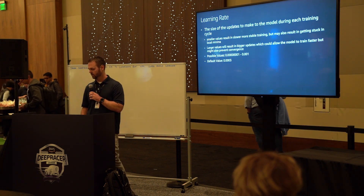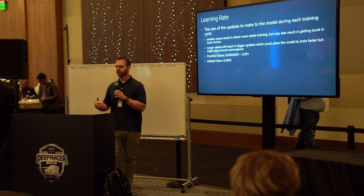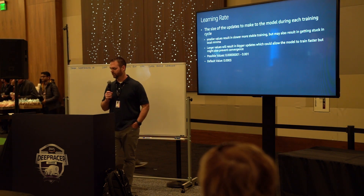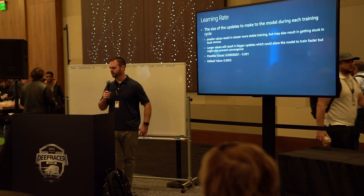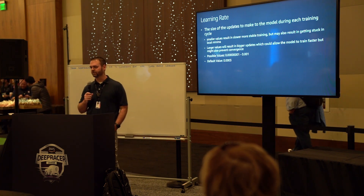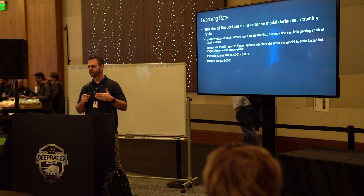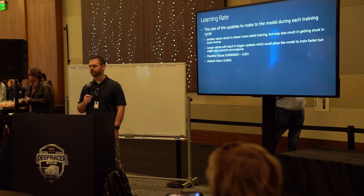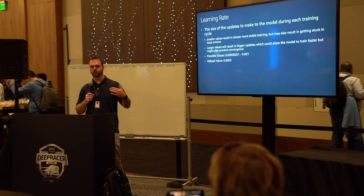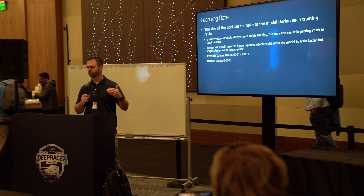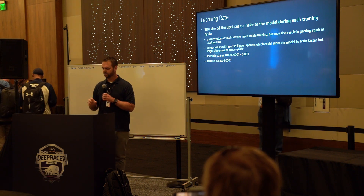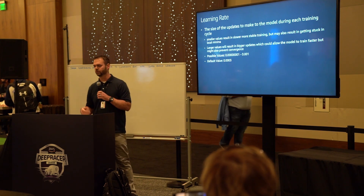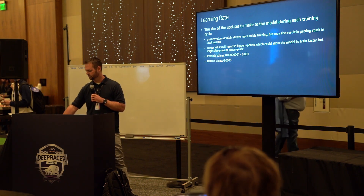Learning rate is the size of the updates that you make during each training cycle. When you think of these models, they're just these huge graphs. The bigger the updates that you make, the more changes you're going to be making to the model, and that could help you train a lot faster — but you also have the possibility of overshooting the result you're trying to get. So you have to be careful with this one, because if you have too high of a learning rate, the adjustments to the model are going to be too big, and it's not going to converge.